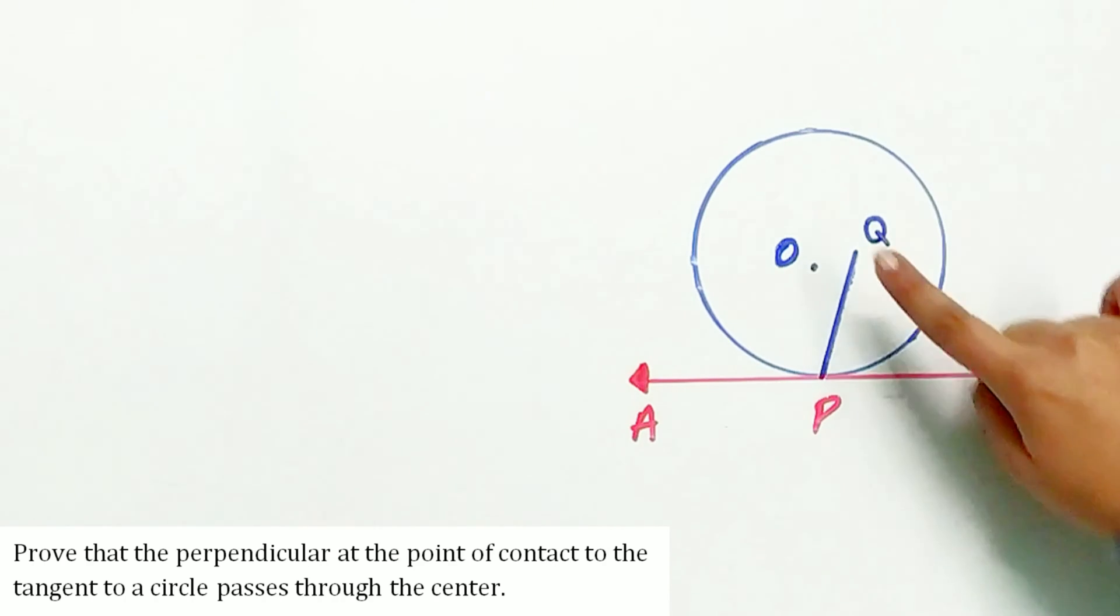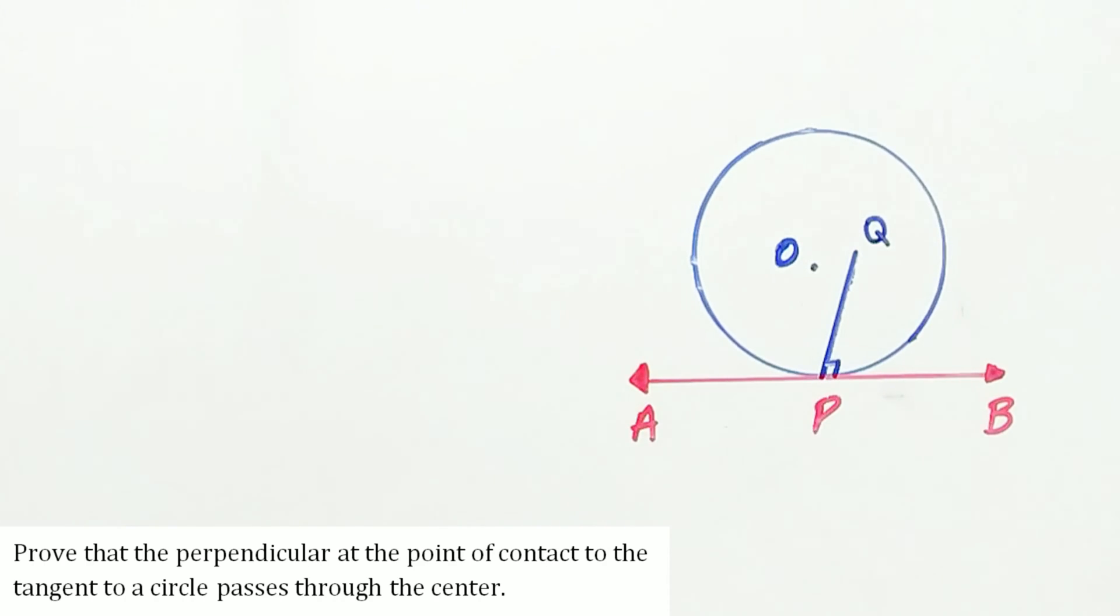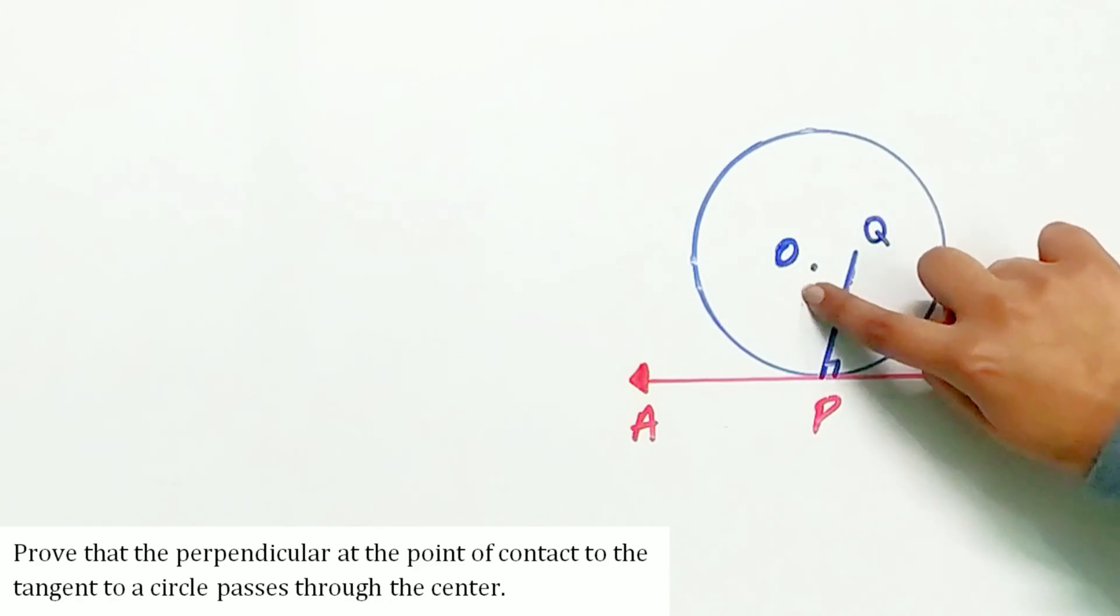Prove that the perpendicular at the point of contact to the tangent to a circle passes through the center.